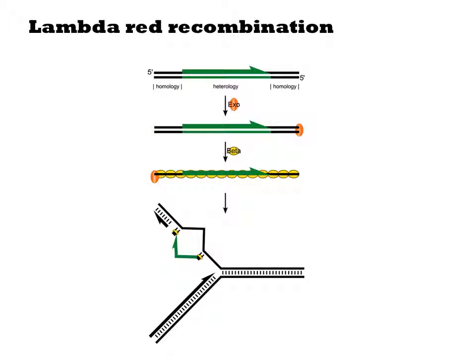The fourth component is lambda-red recombination. We've seen this system before in the context of MAGE. The device is composed of three genes: XO, beta, and GAM. When a double-stranded linear DNA is introduced into cells encoding lambda-red, it is highly recombinogenic. The XO function degrades one strand, resulting in a single-stranded DNA. Beta binds to the single-stranded DNA, while GAM modifies normal DNA repair processes. The specifics of the mechanism are not all worked out, but this protein-DNA complex infiltrates the replication fork, incorporating the DNA into homologous sequences.